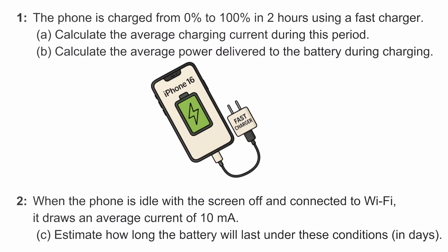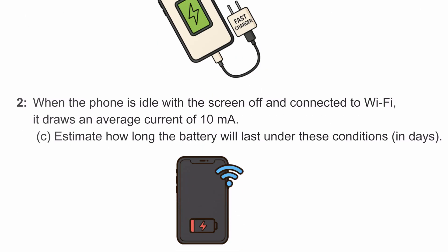Now flip the scenario. When the phone is idle, with the screen off and Wi-Fi on, it draws just 10 milliamps. So for the third part, we'll figure out how long the battery would last in that low-power state.